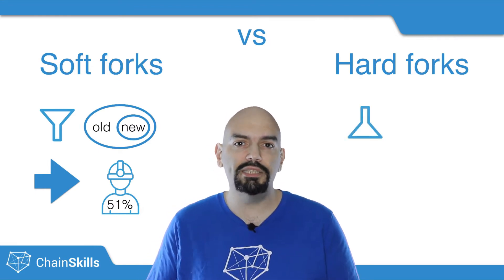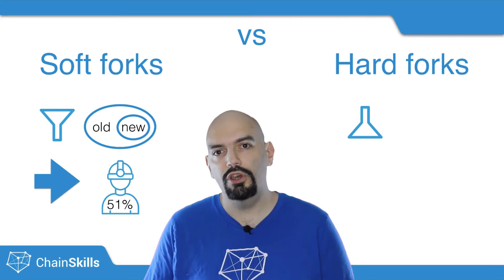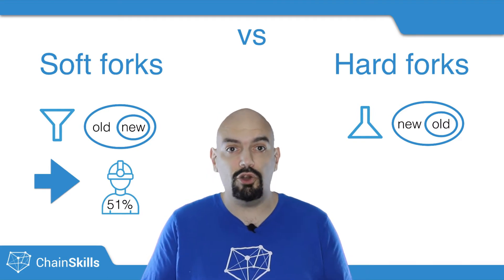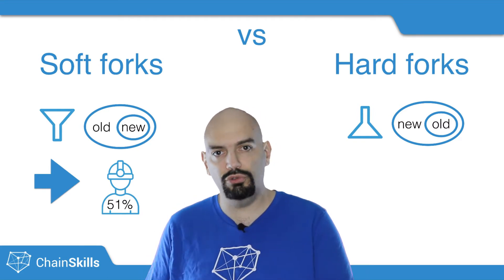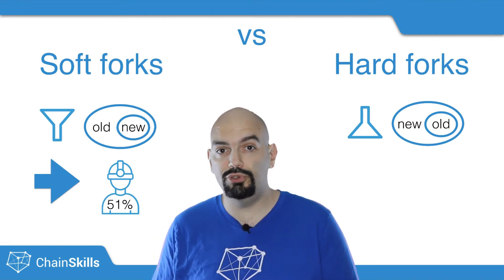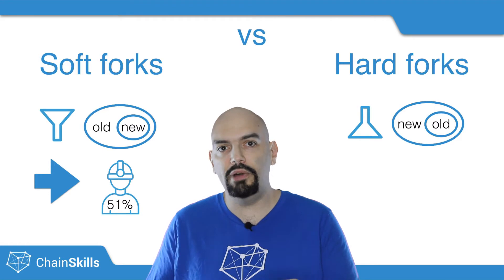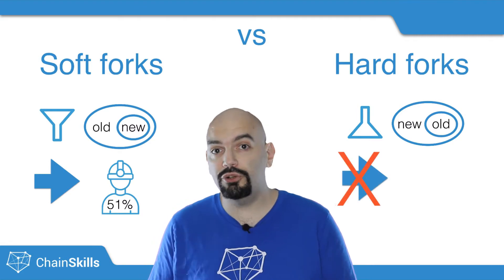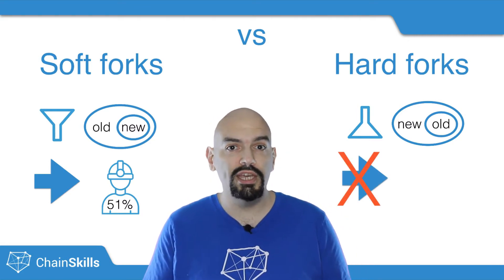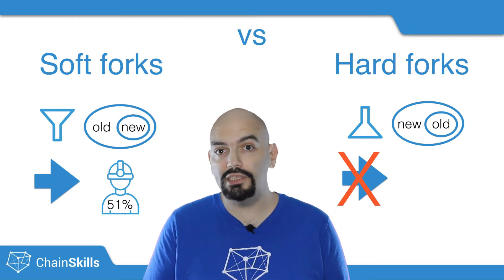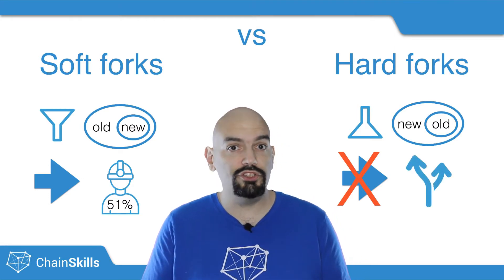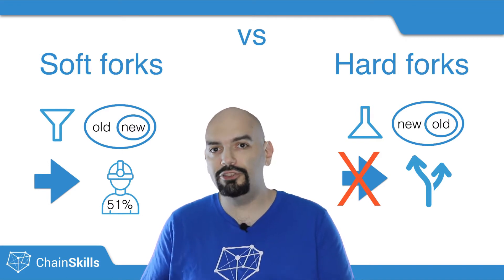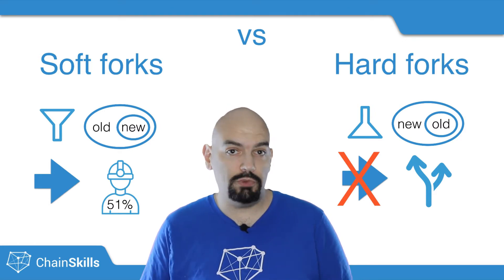Hard forks, on the other hand, ease block acceptance rules compared to old versions — the new rules are a superset of the old ones, meaning that some blocks that were invalid according to the old rules become valid by the new rules. Some blocks produced by the new software will not be validated by nodes running the old software, so this kind of fork is not forward compatible. If a majority of non-mining nodes stay on the old version, even if more than half of the mining power upgrades, you'll have a blockchain split — two ledgers coexisting in parallel, where the first blocks up to the forking block are the same, but later blocks are different.